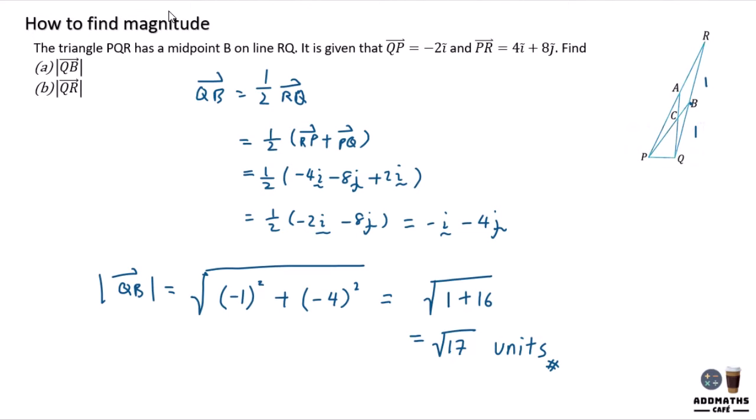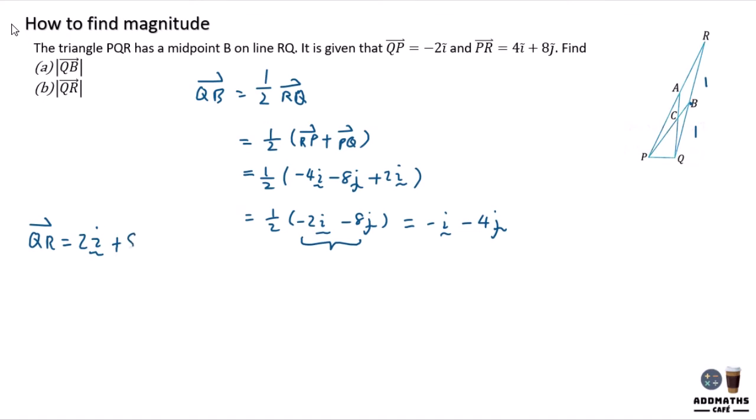To find QR, we can see that this is RQ, and QR will be the opposite direction of RQ. So it will be positive 2i plus 8j.